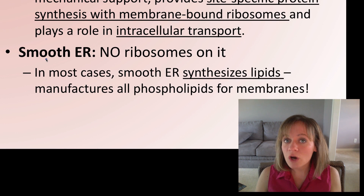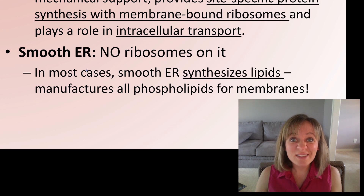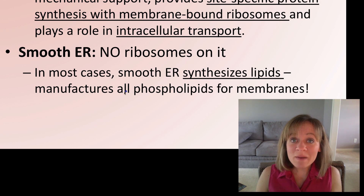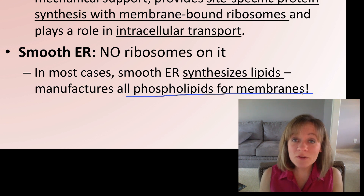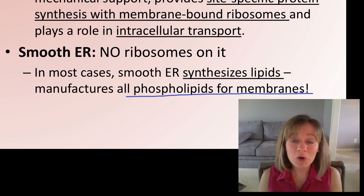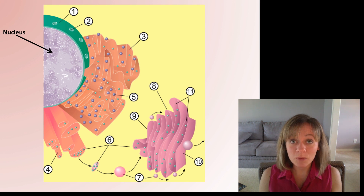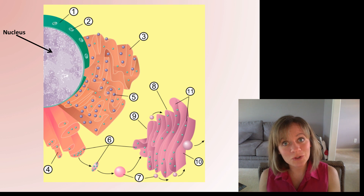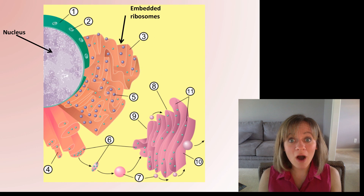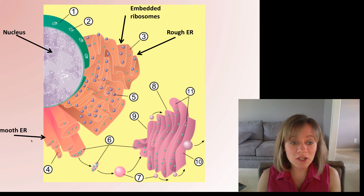The other type is the smooth ER — no ribosomes, which is why we call it smooth. The smooth ER has a big job: it synthesizes all the lipids the cell needs, manufacturing all the phospholipids for the internal membranes of the organelles and for the outside cell membrane's phospholipid bilayer. Looking at a close-up of a cell, the nucleus is here with the nuclear envelope — like a whiffle ball with holes so RNA can leave and go to the ribosome. Directly coming off the nucleus is the rough ER with embedded ribosomes, then the smooth ER with no ribosomes.